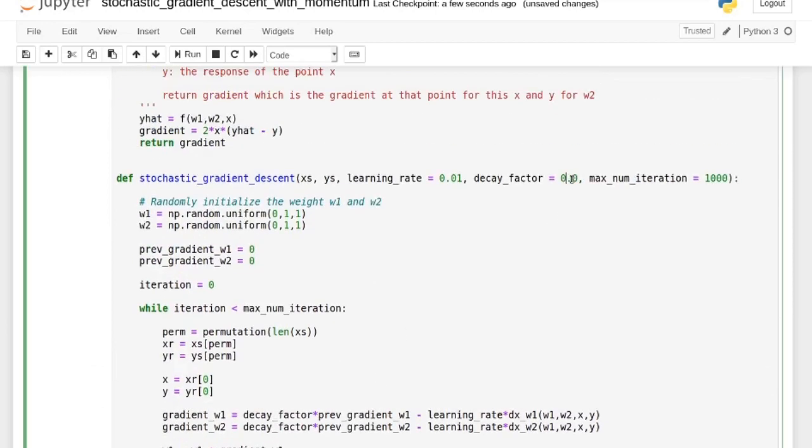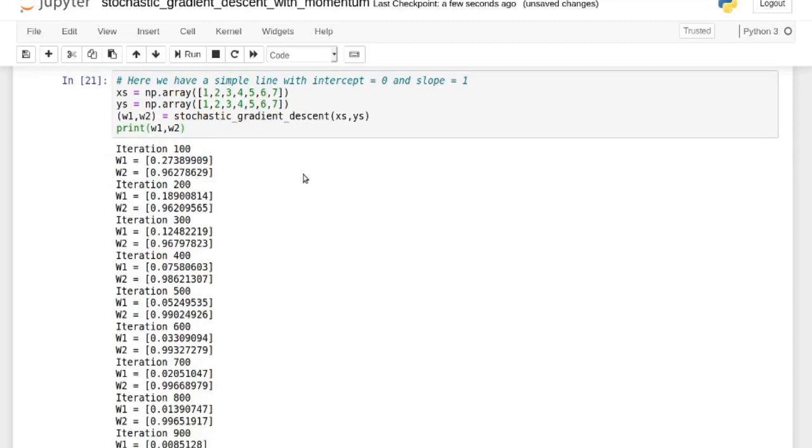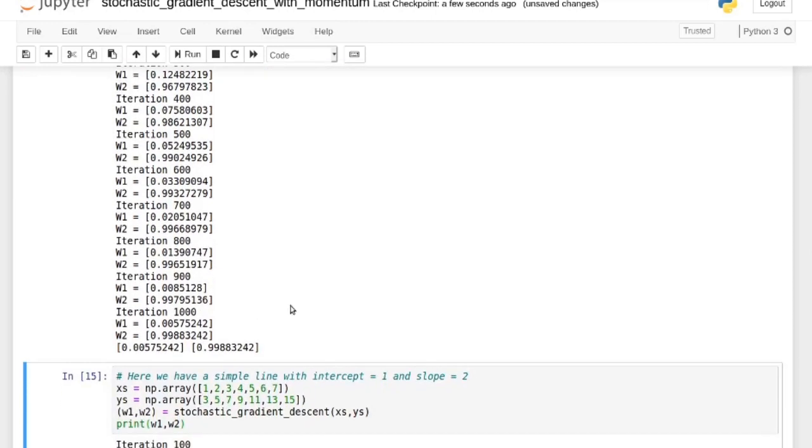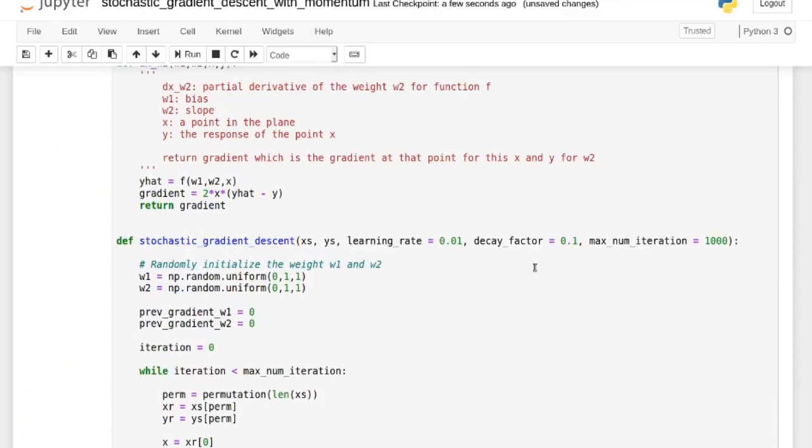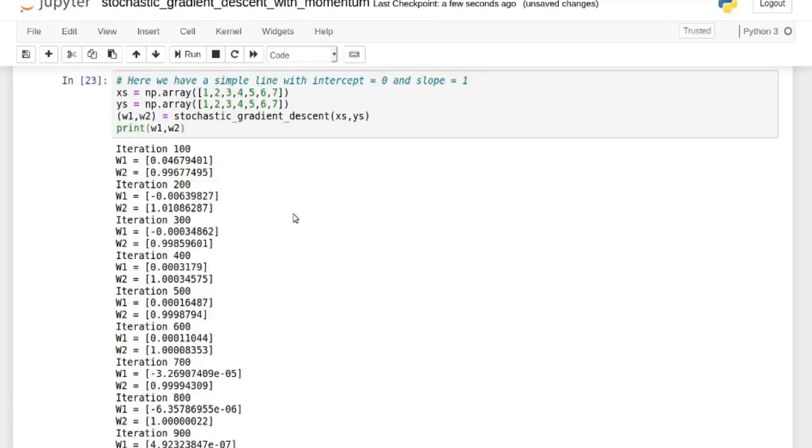If we choose something like 0.1 here, that will actually be not that bad. Yeah, not bad, but a bit slower, right, to converge. So you can play around with this. But usually, 0.9 is pretty standard to get a good result.